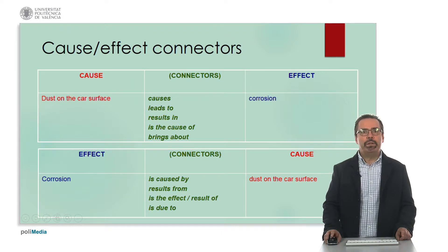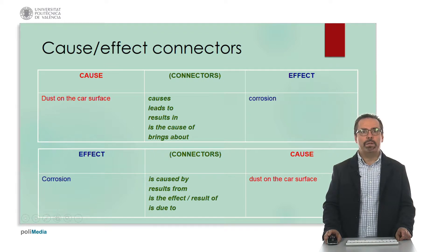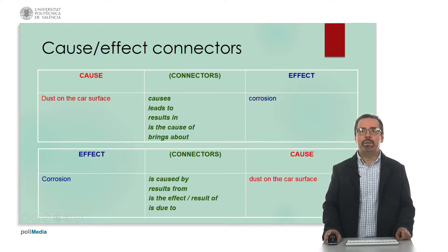It is very important when we want to express a cause and effect relationship to know which is the cause and which is the effect. Here on this table we have the cause in red and the effect or the consequence in blue. Then, depending on the location of the cause and effect in the sentence, we can use one set of connectors or another.